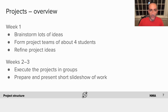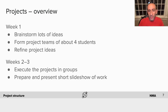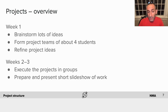Let me give you an overview of how the projects are going to flow. Week one is mostly dedicated to finding a good project. In the beginning you'll brainstorm lots of ideas, form project teams based on the affinity of who likes what type of project — groups of about four people — and then you'll spend the rest of the week refining ideas and coming up with a proposal. The second two weeks, you'll be executing those projects in your small groups, and at the end of week three present a short slideshow of your work in a poster session.